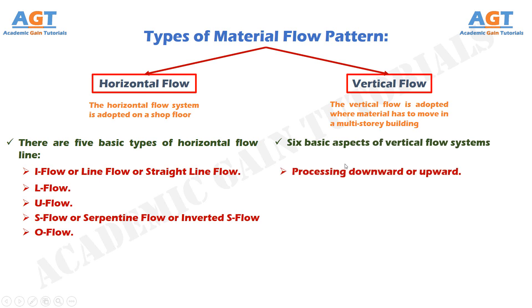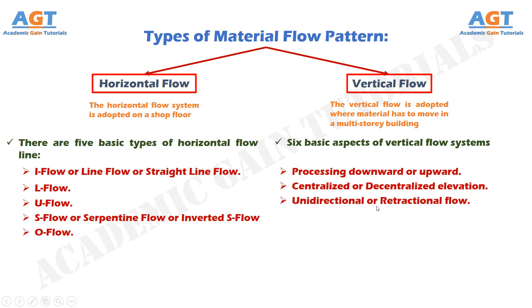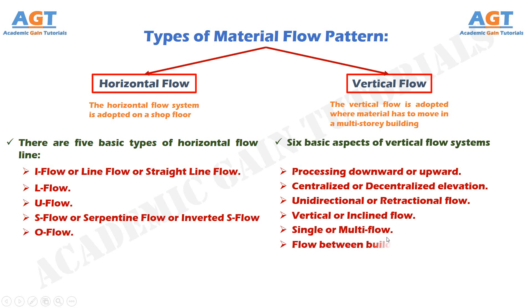Number 1: Processing downward or upward. Number 2: Centralized or decentralized elevation. Number 3: Unidirectional or retractional flow. Number 4: Vertical or inclined flow. Number 5: Single or multi-flow. Number 6: Flow between buildings.